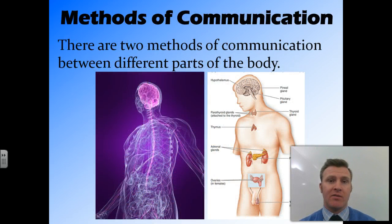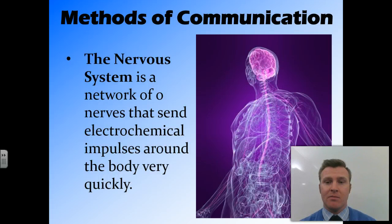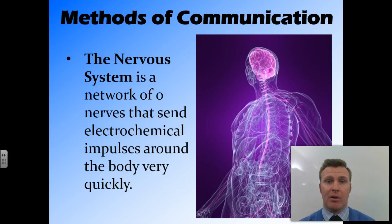There are two main methods of communication between the different parts of the body. The first is the nervous system, which consists of a whole heap of nerves that run through the body and transmit electrochemical signals throughout the body, and that happens very, very quickly. So if you put your hand on a hot plate, you very quickly know that you feel pain and you can pull it off the hot plate.